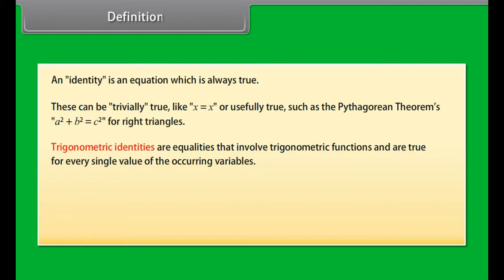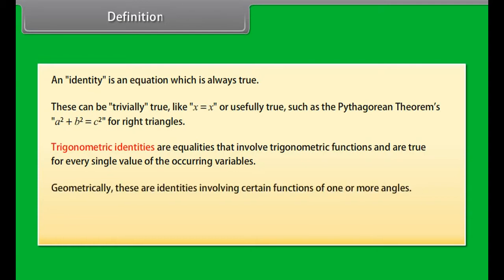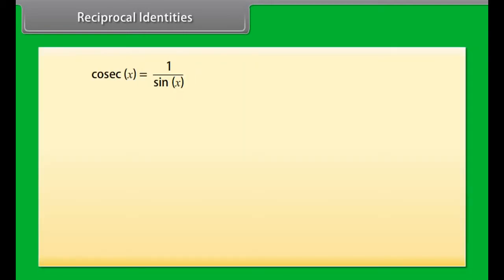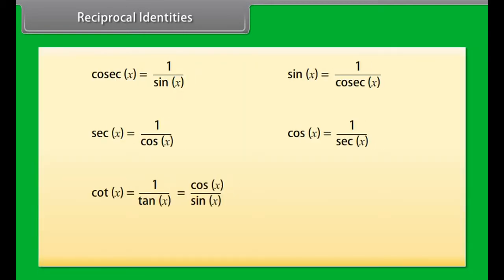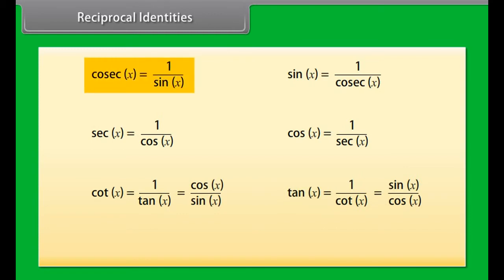Trigonometric identities are equalities that involve trigonometric functions and are true for every single value of the occurring variables. Geometrically, these are identities involving certain functions of one or more angles. They are distinct from triangle identities, which involve both angles and side lengths of a triangle.